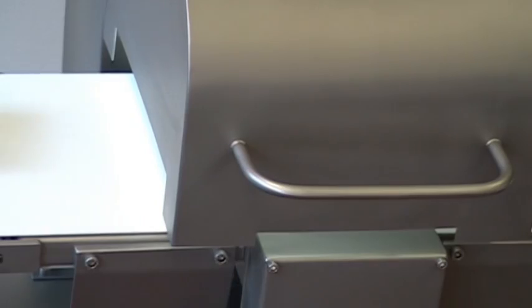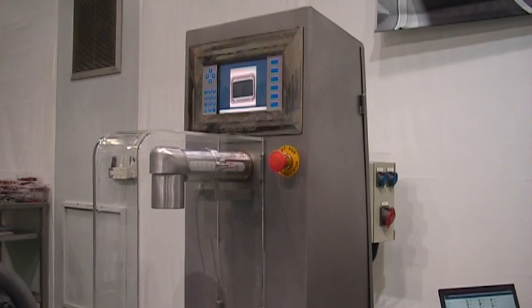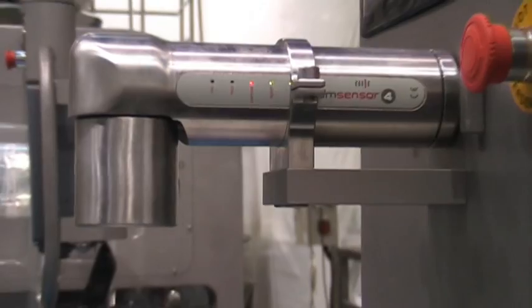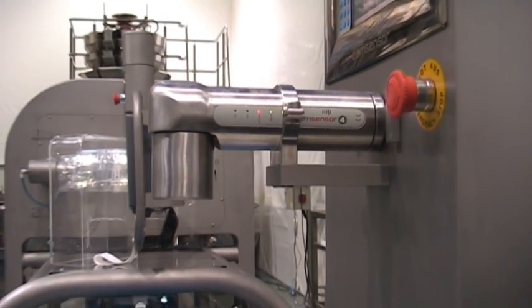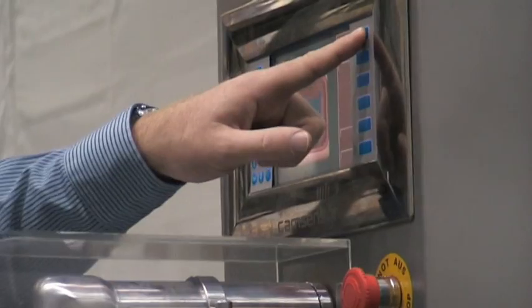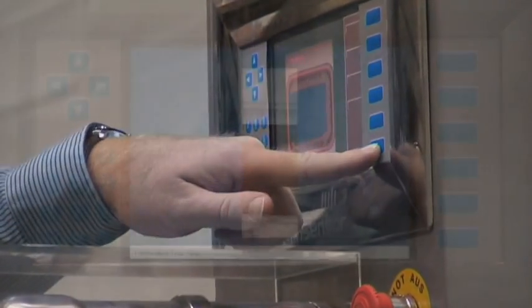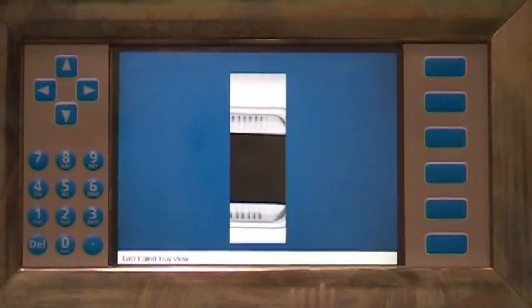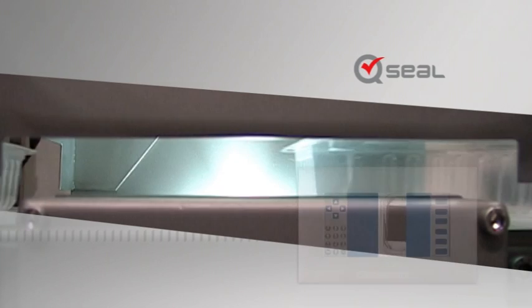The system can detect defects as small as 0.25mm. Images of the scanned products are displayed and recorded on the CamConsole. A configurable reject signal is given to your reject station.